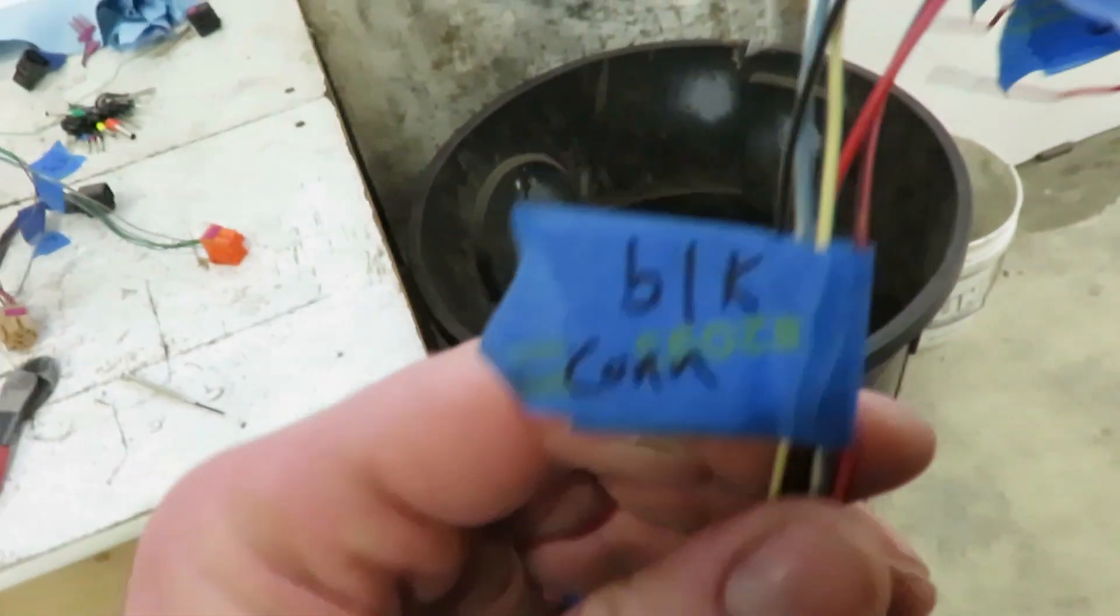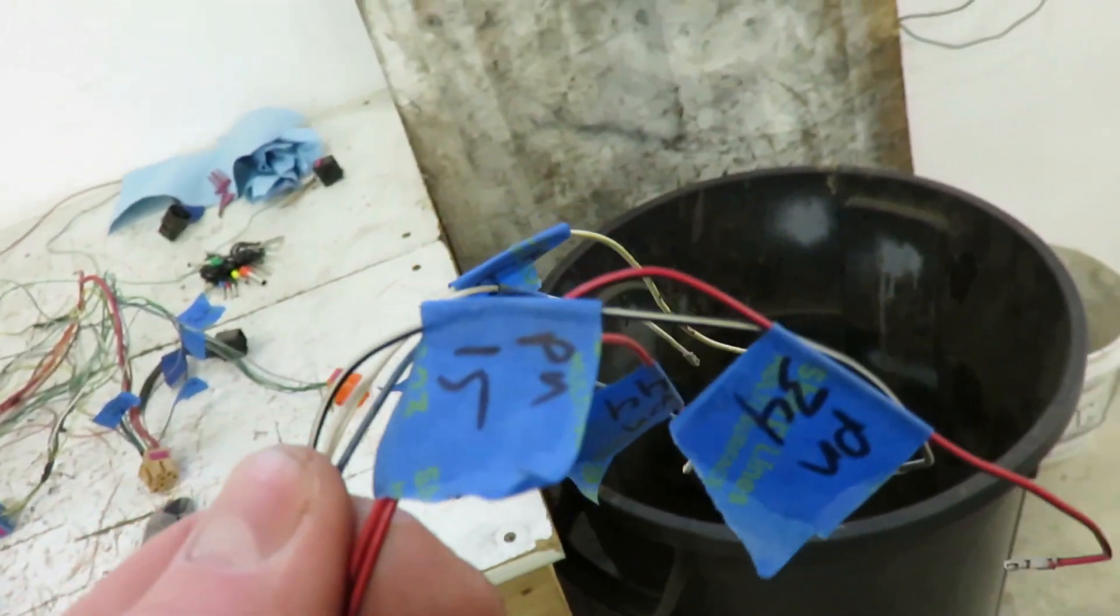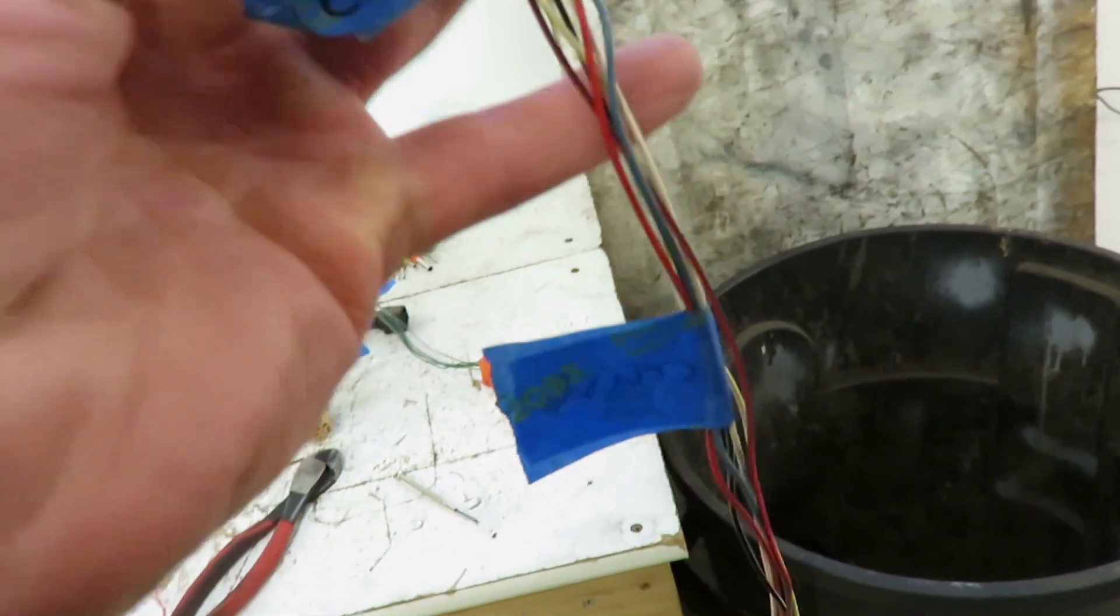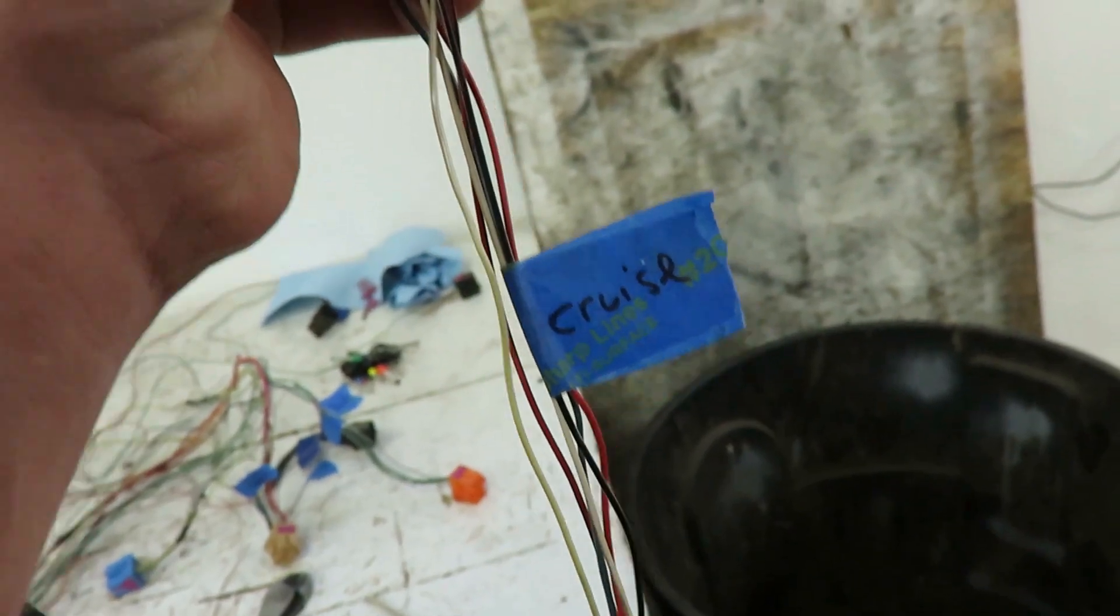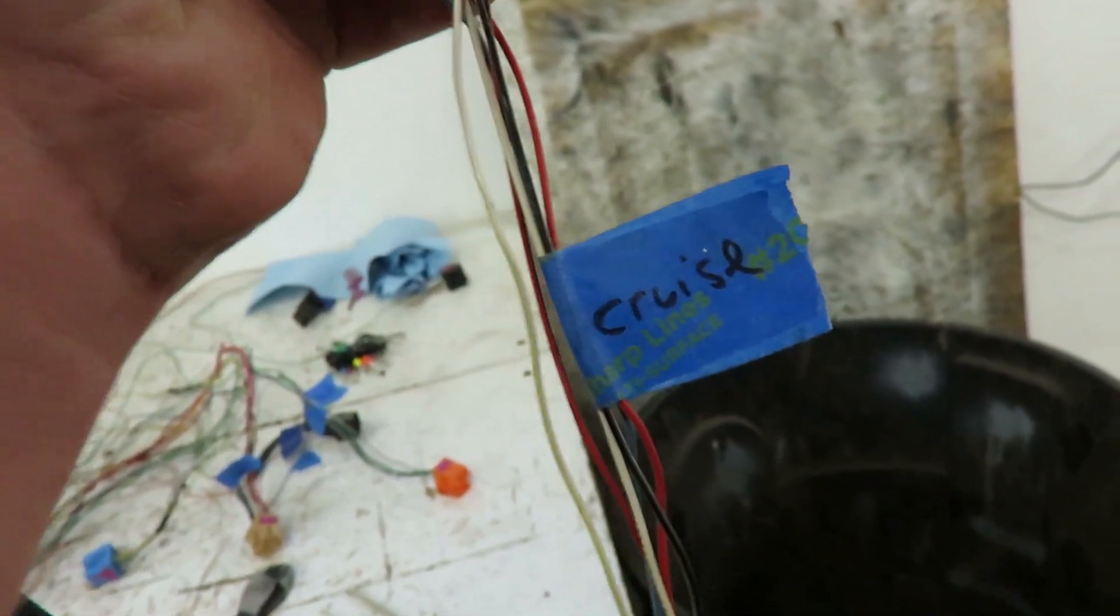I already got rid of, this is from the black connector. Those are all labeled. These are mainly clutch, cruise, everything to do with cruise, so clutch and brake switches.